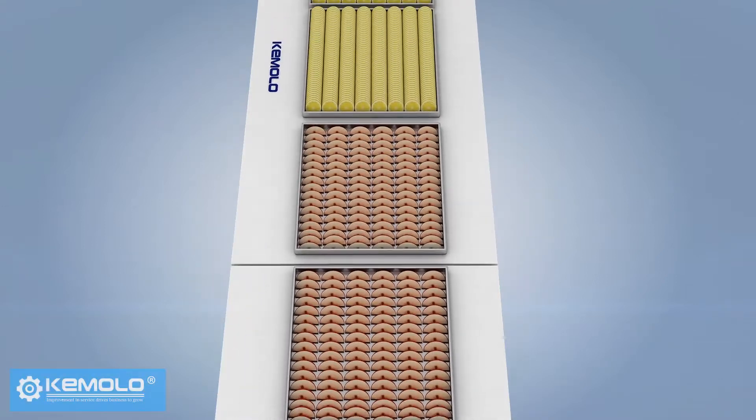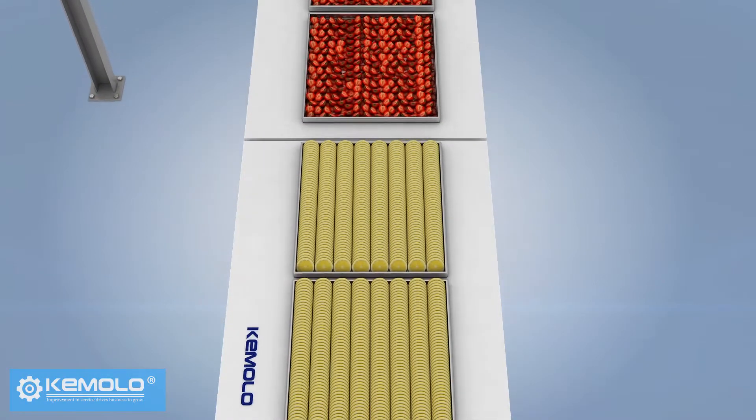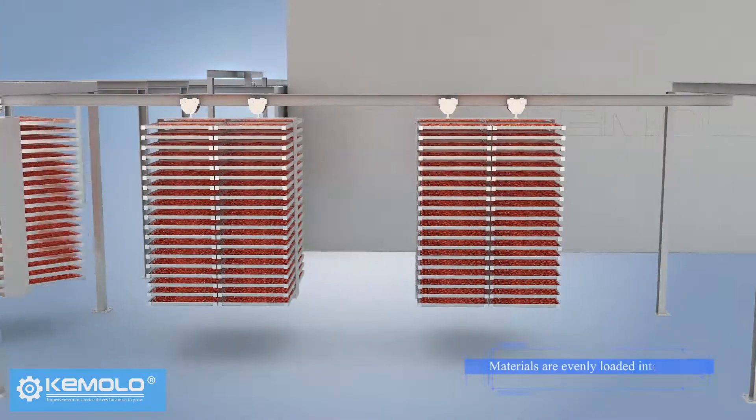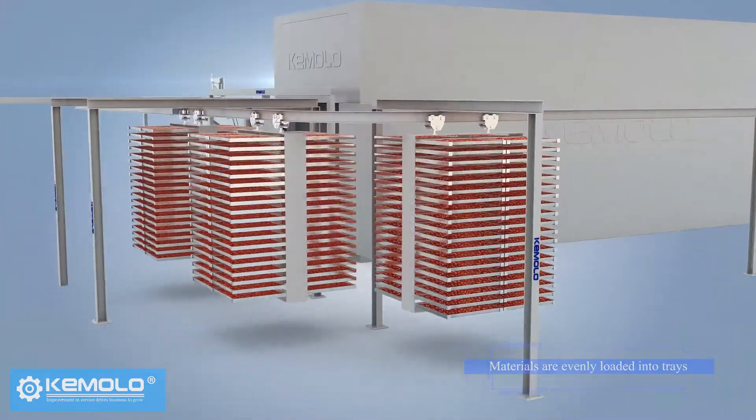First, wash and slice fruits, vegetables, or other pre-processed materials evenly and load them into product trays.